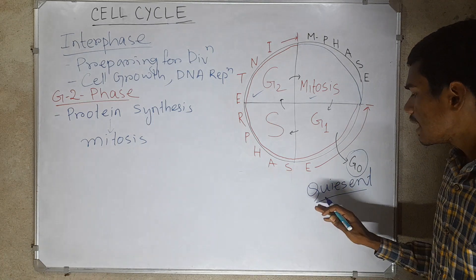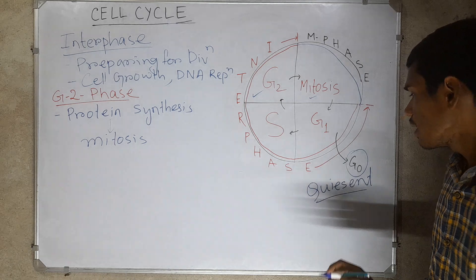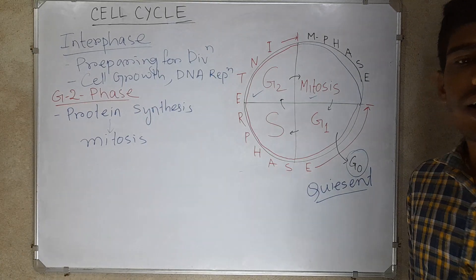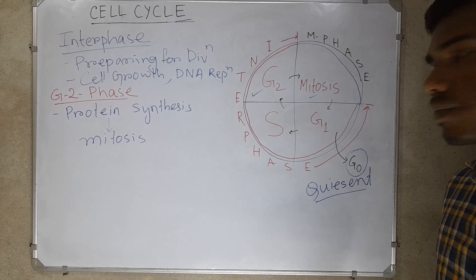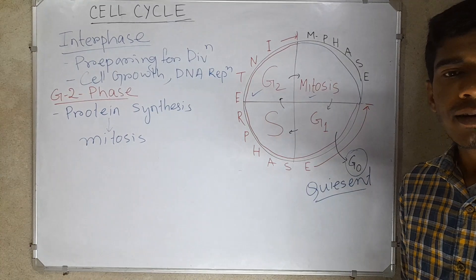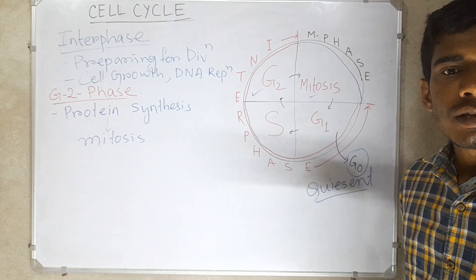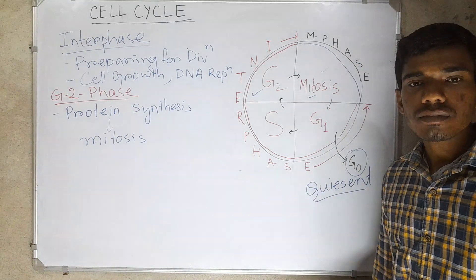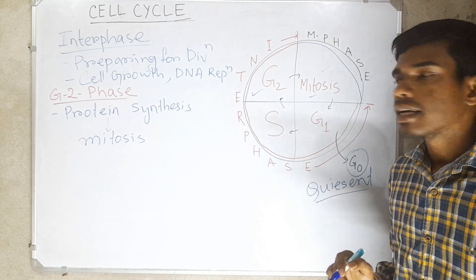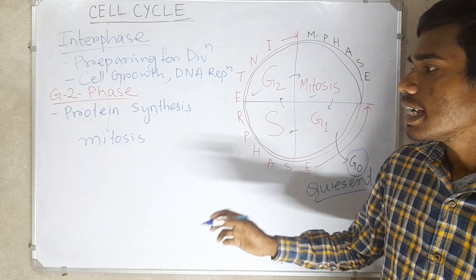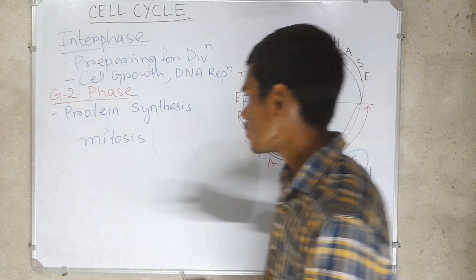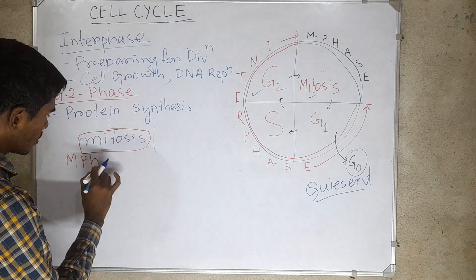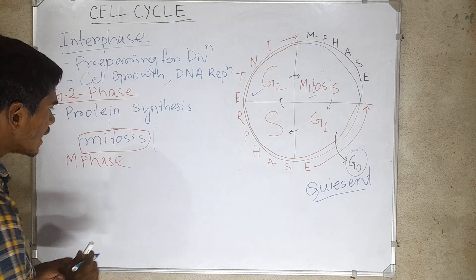In G0 stage, the cells are metabolically active but do not proliferate unless required by that particular organism. In animals, mitotic cell division takes place in diploid cells only, but in case of plants, mitotic cell division takes place in both haploid and diploid cells. The M phase is the phase of actual division of cells, in which the cells are divided and separated.